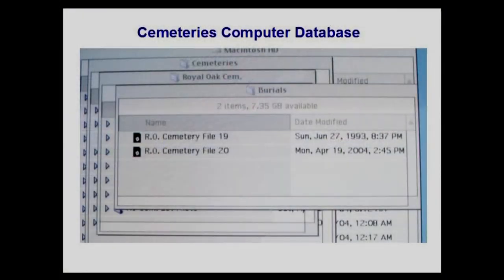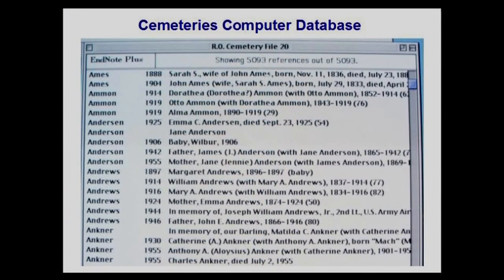The cemetery's computer database is the next thing we'll take up. It's a database that runs on a microcomputer — my Macintosh, but it could be adapted easily for PCs. It runs in software called EndNote, and the information was typed in laboriously over dozens, maybe hundreds of hours. We have information such as the name, last name, first name if known, the date the person was buried — presumably also when they died, but not necessarily — and the date they were born.